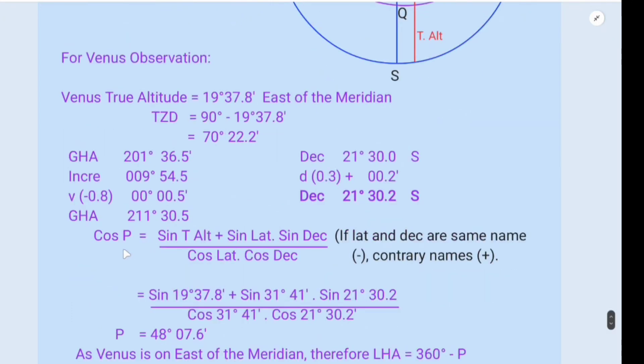So using long by Crone method, the long by Crone formula is: cos P equals sine true altitude plus/minus sine lat times sine declination, divided by cos lat times cos declination. So in this formula I have written as plus. If latitude and declination are same then we subtract. Contrary names then add.